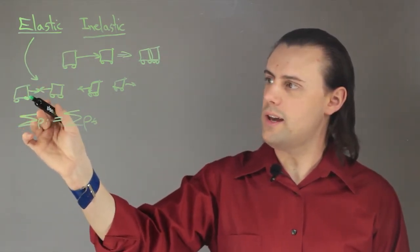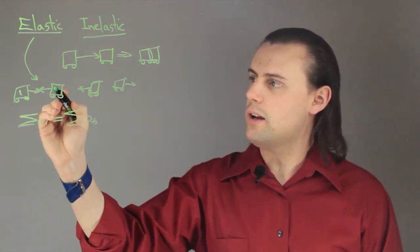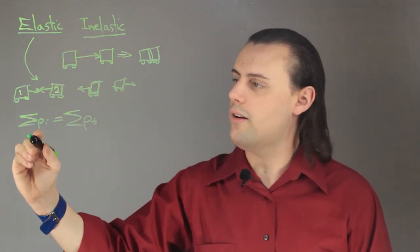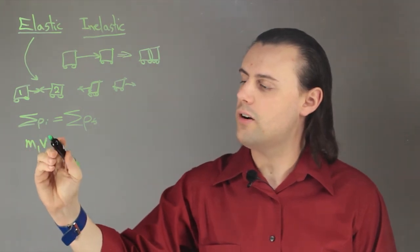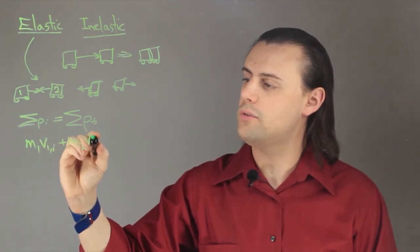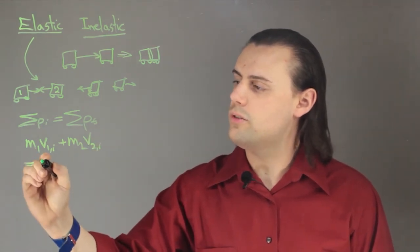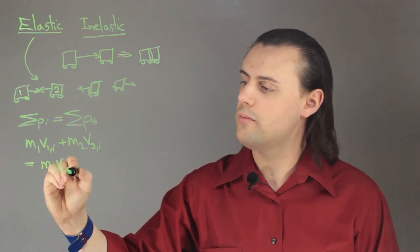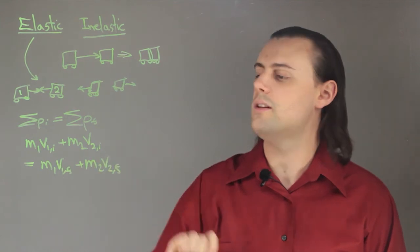So, if we consider this simple case of two cars, you have car 1 and car 2. In the case of an elastic collision you will have the mass of car 1 times the velocity of car 1 initially plus the mass of car 2 times the initial velocity of car 2. That's going to be equal to mass of car 1 times its final velocity plus the mass of car 2 times its final velocity as well.